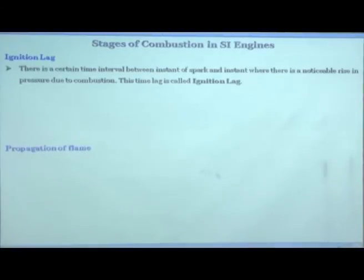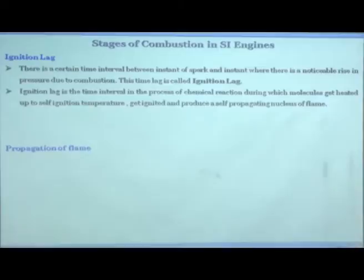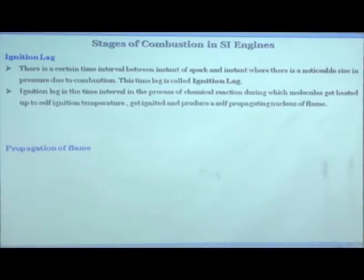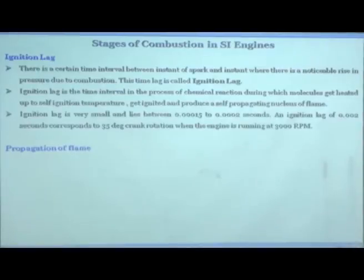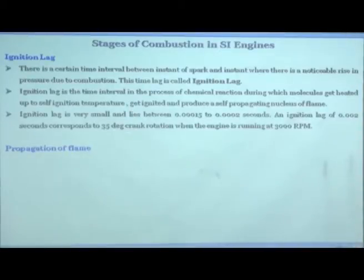Ignition delay is the time interval between the instant the spark is applied and the instant where there is a noticeable rise in pressure due to combustion. It is the interval during which the molecules of the fuel-air mixture get heated to self-ignition temperature, get ignited, and produce a self-propagating nucleus of flame. Ignition delay is very small — it lies between 0.15 and 0.2 milliseconds (150 to 200 microseconds). An ignition delay of 0.2 ms corresponds to 35 degrees of crank angle rotation when the engine is at 3000 RPM.